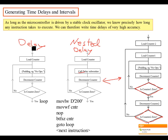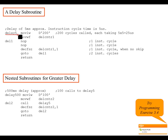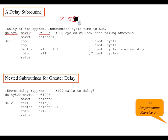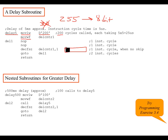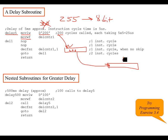Here's what the code looks like. You have a delay label — delay5 — then move literal to W, decimal 200. We're loading the number 200. Remember that 255 is the maximum decimal value for an 8-bit number, so you can't load 300. Then you do move WF to move the 200 from the W register into a file register called delay counter.